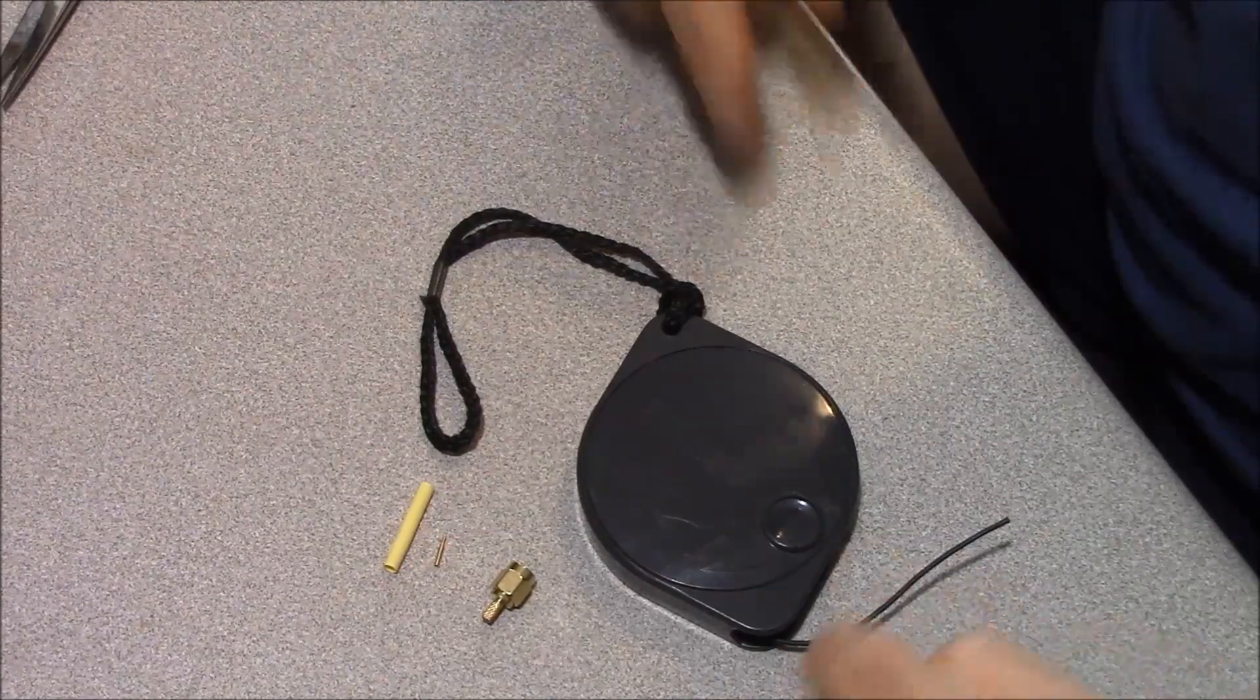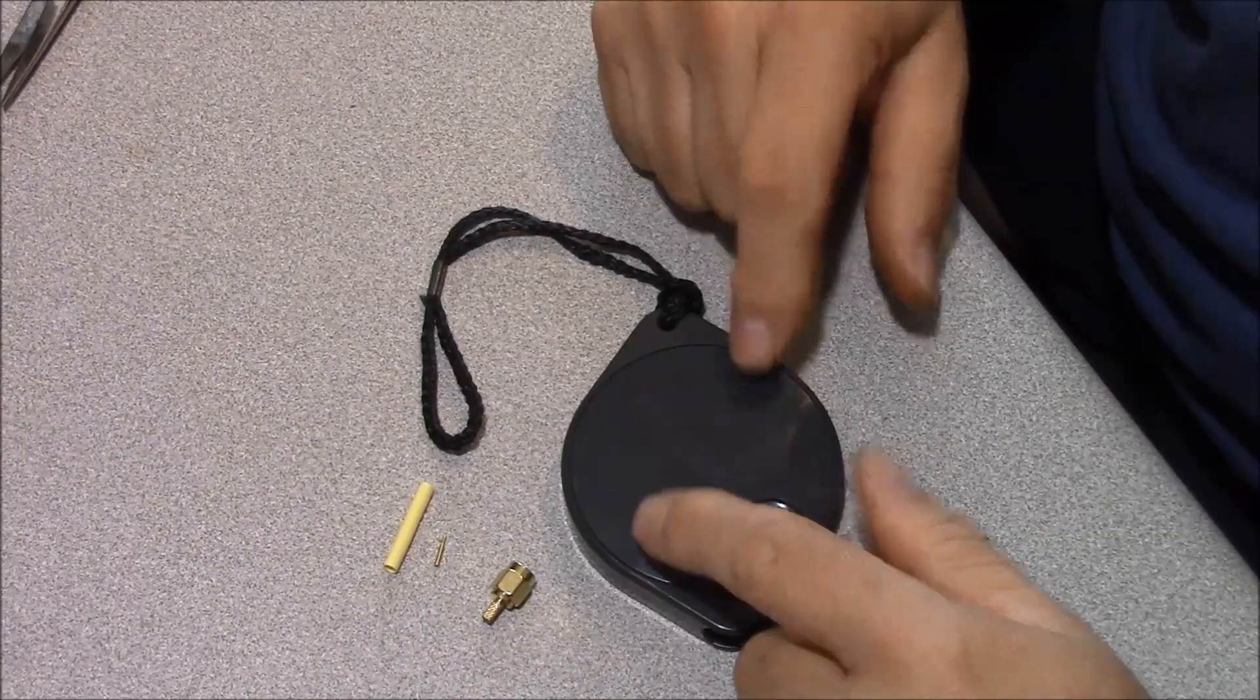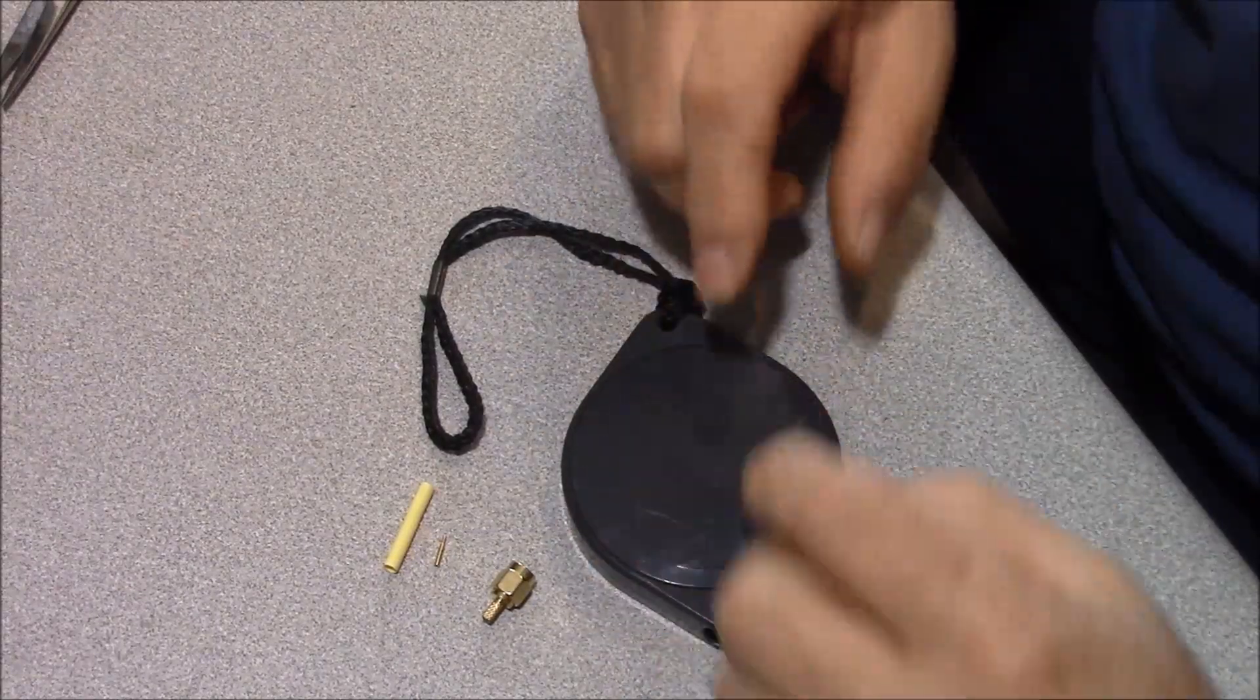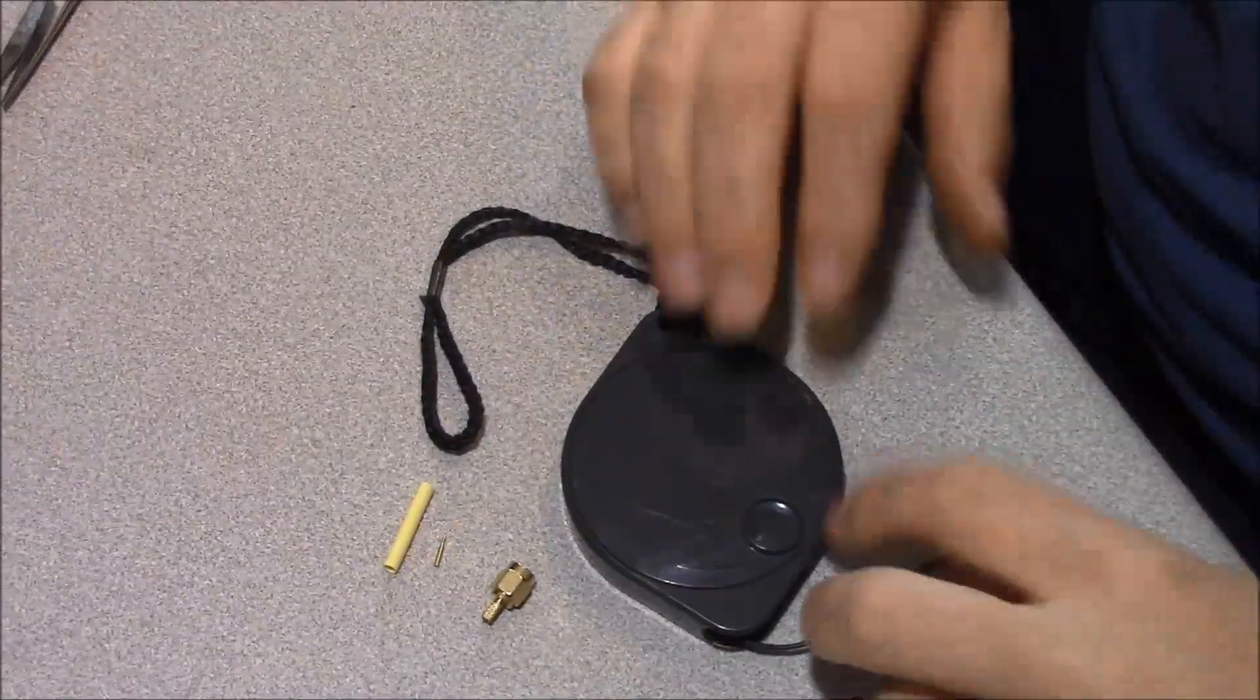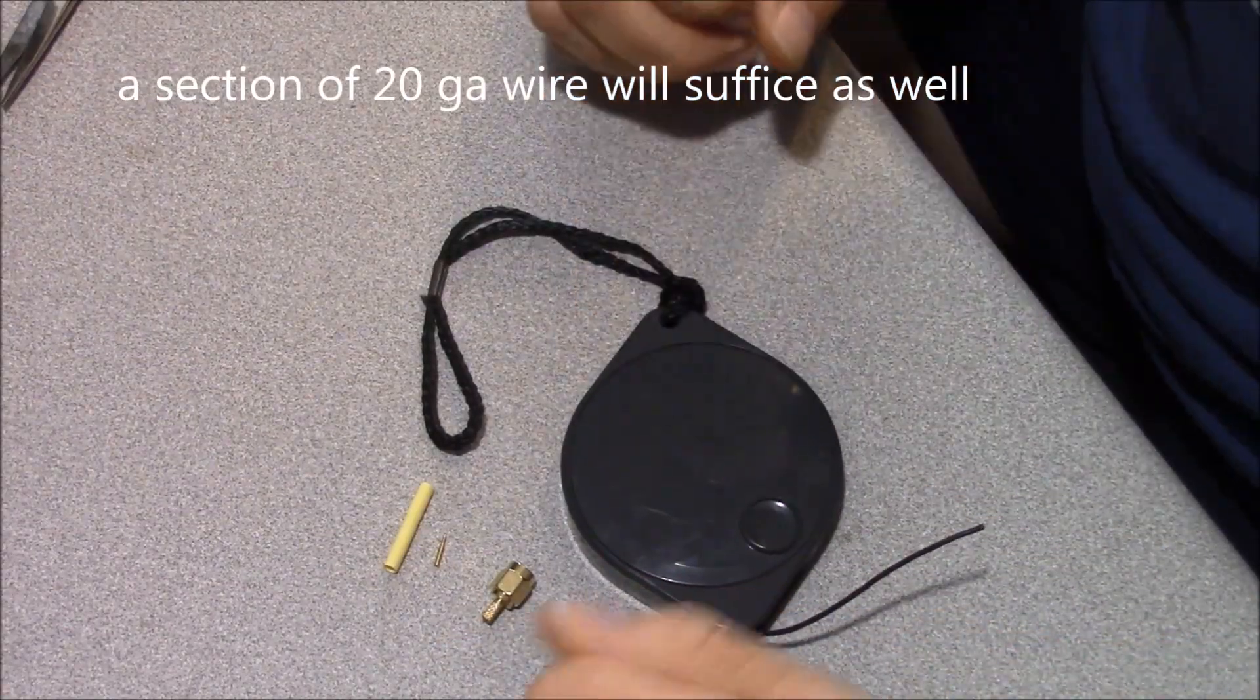These antennas are easy to make. Just get yourself a little reel type of shortwave monitoring antenna which is just a spool of wire. It's easy to pay out and retract. Usually they have like a 3.5mm connector. Just lop that connector off because you're not going to need it.